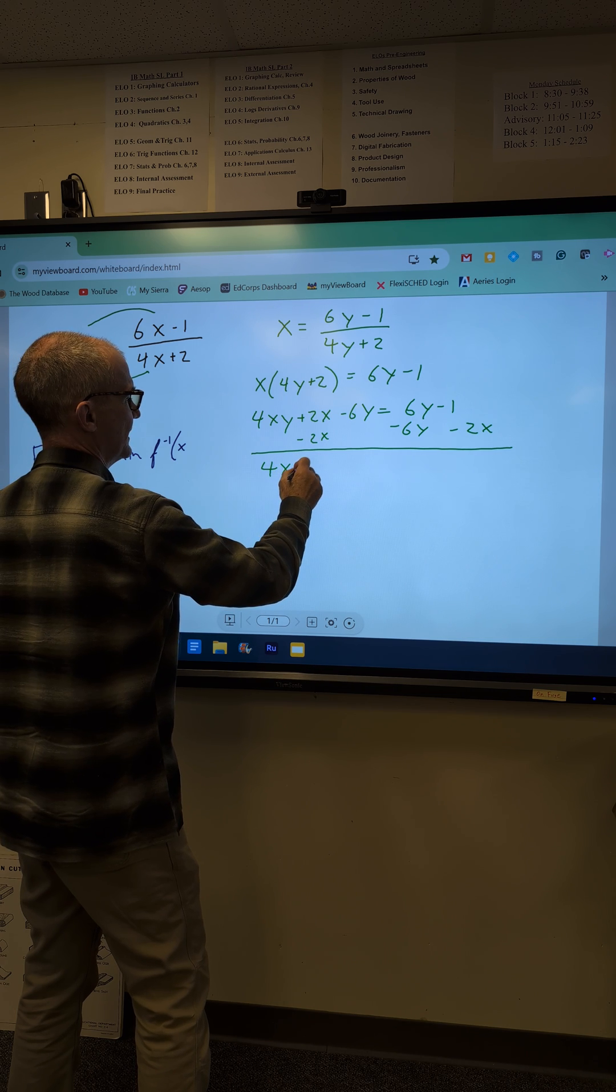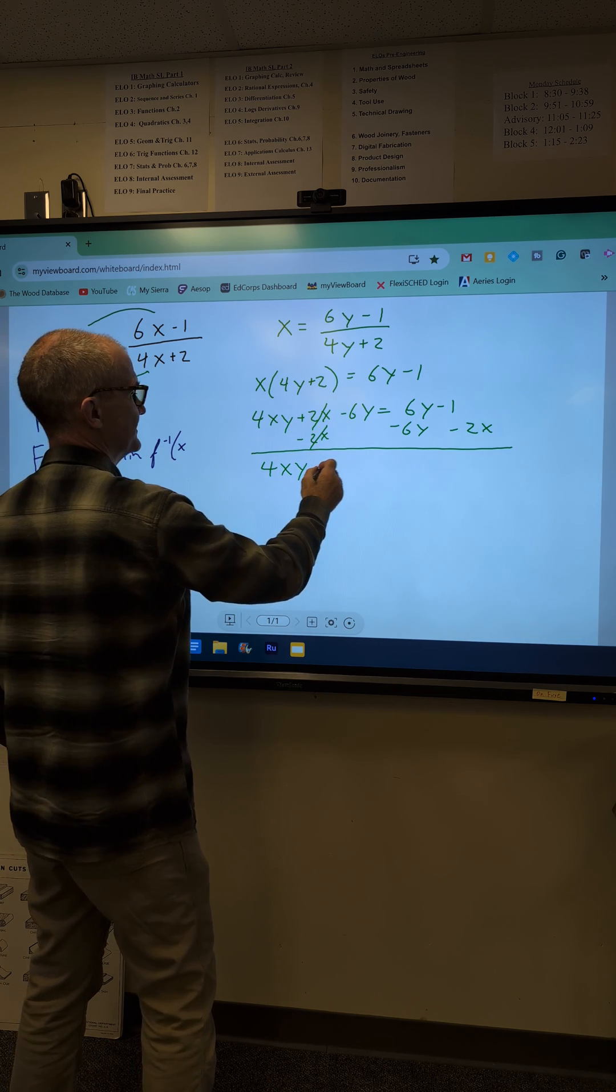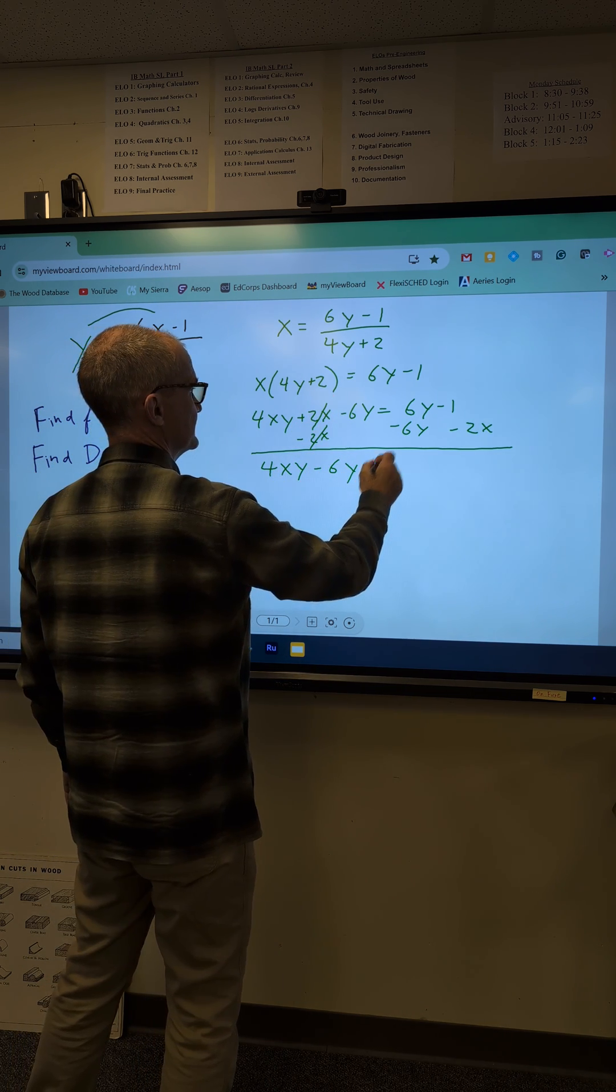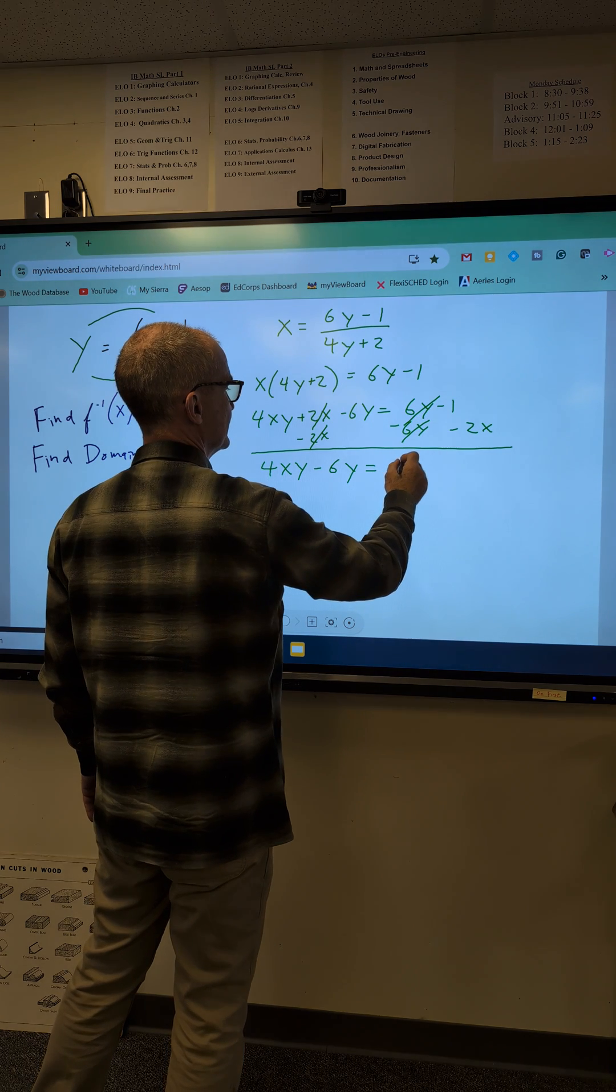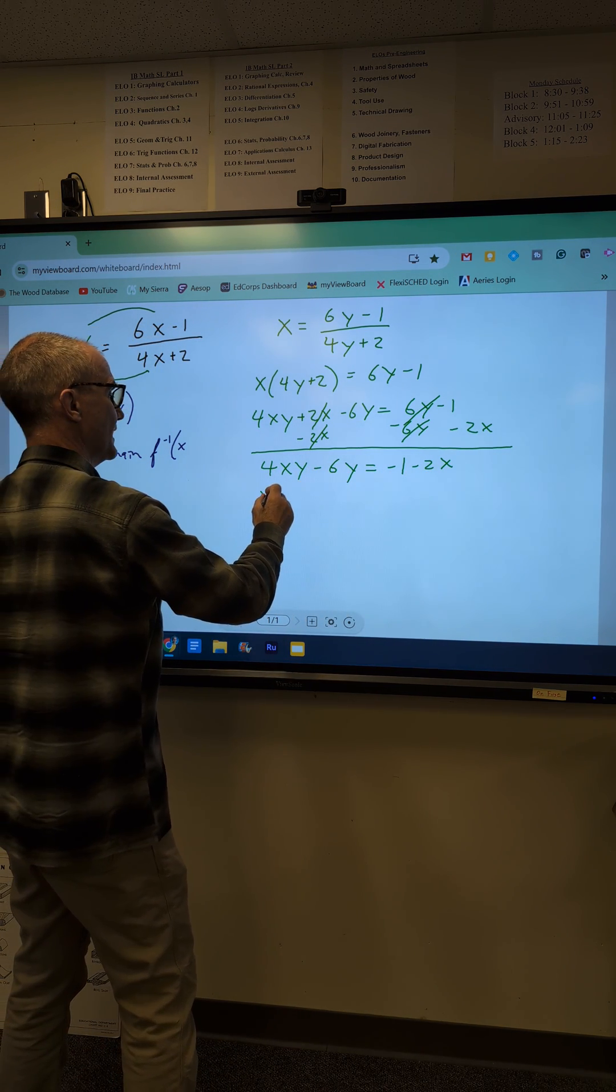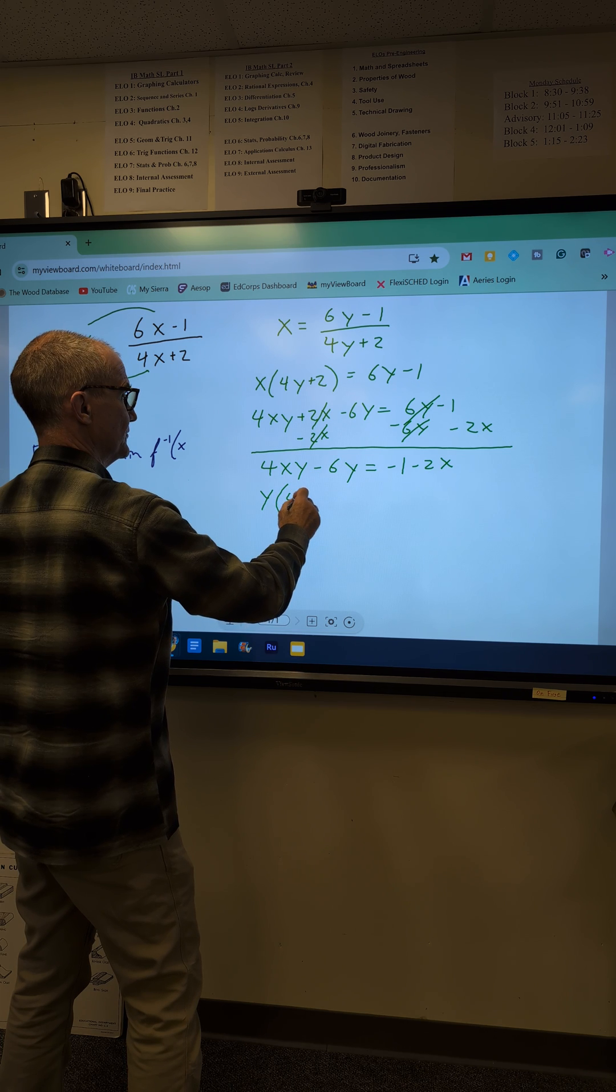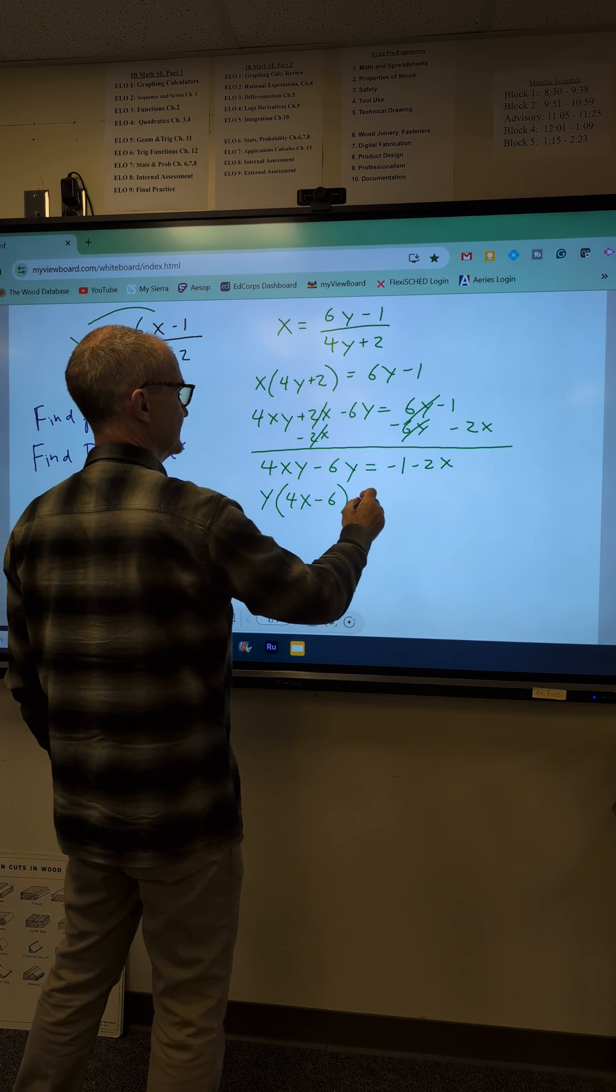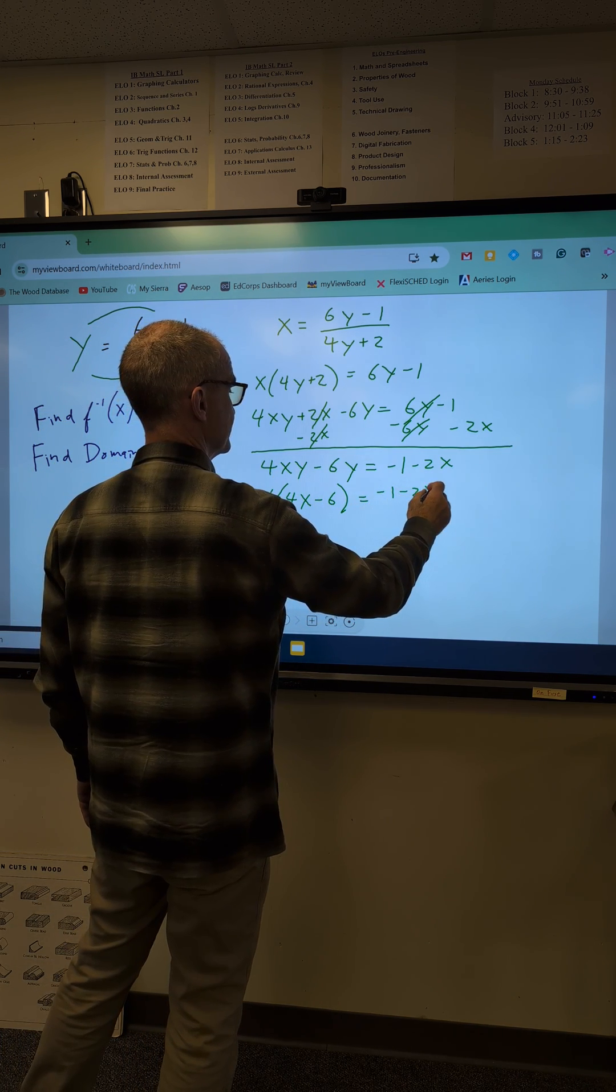That's going to give me 4xy, those will cancel, minus 6y is equal to negative 1 minus 2x. Factor out the common term of y, leaving me with 4x in that first term minus 6, equal to negative 1 minus 2x.